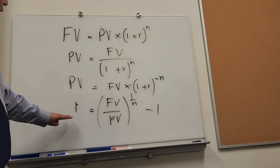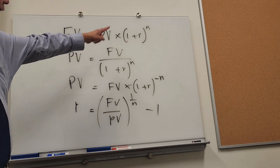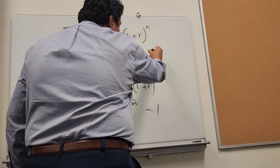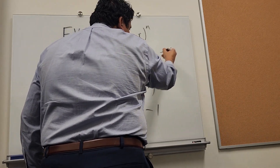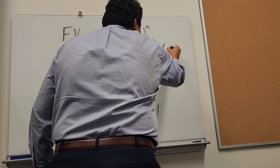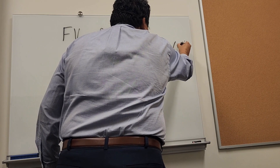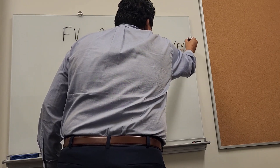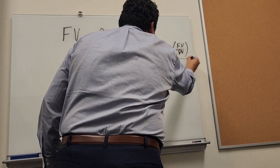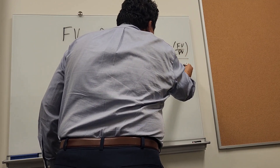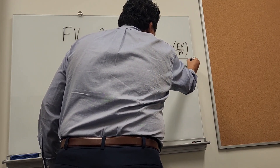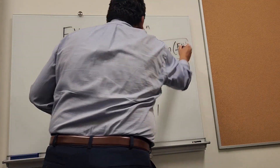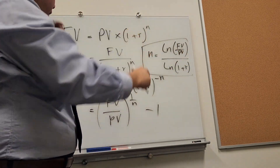You can also rearrange this equation to find n. So n equals the natural log of future value over present value, divided by the natural log of 1 plus r. This is how you rearrange this equation to find n.